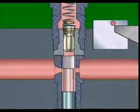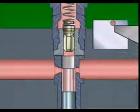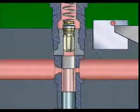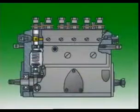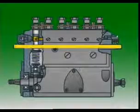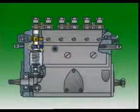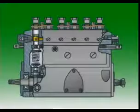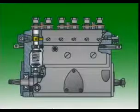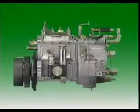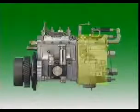The plunger is rotated by a control sleeve, a rack, and the pinion. Moving the rack rotates the pinion, the control sleeve, and then the plunger. The rack's movement is controlled by the governor.